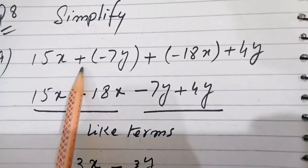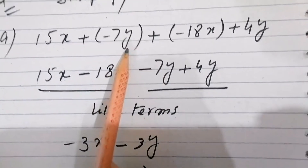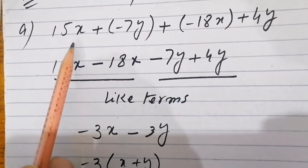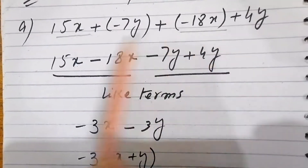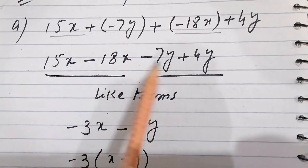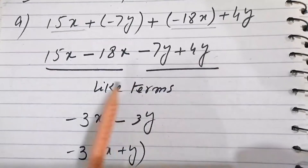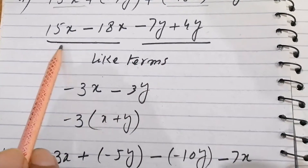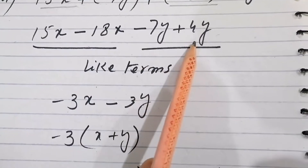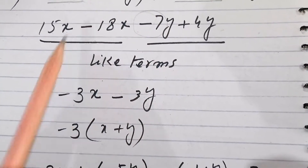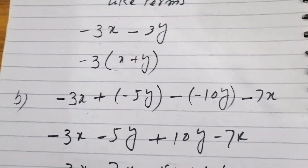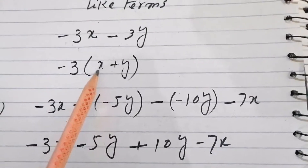The first one is 15x + (-7y) + (-18x + 4y). We identify the like terms: 15x minus 18x, and -7y plus 4y. Subtracting, 18 minus 15 gives -3x, and 7 minus 4 gives -3y. Taking -3 common, the answer is -3(x + 5y).